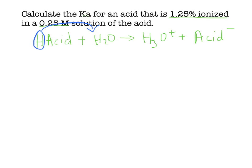So starting the same way as before, it is 0.25 molar acid. And if it's 1.25% ionized, that means that the change here is going to be 1.25% of 0.25. So all I have to do is figure out what is 1.25% of 0.25.